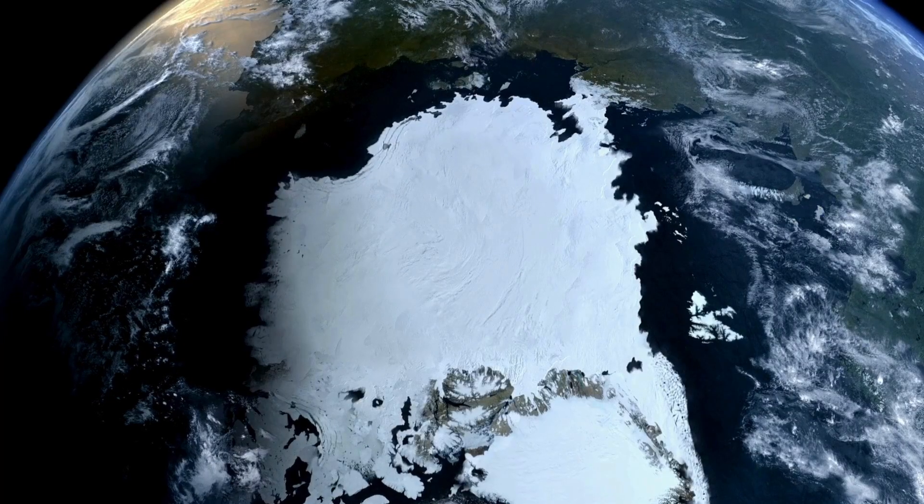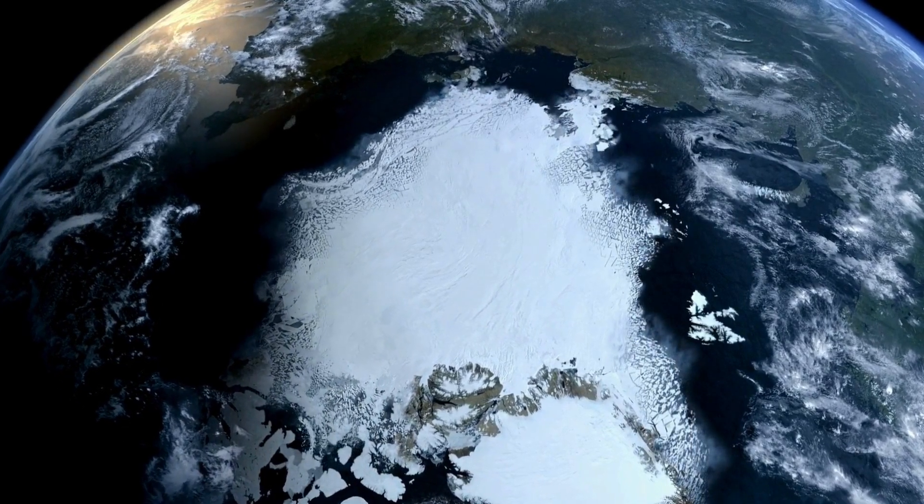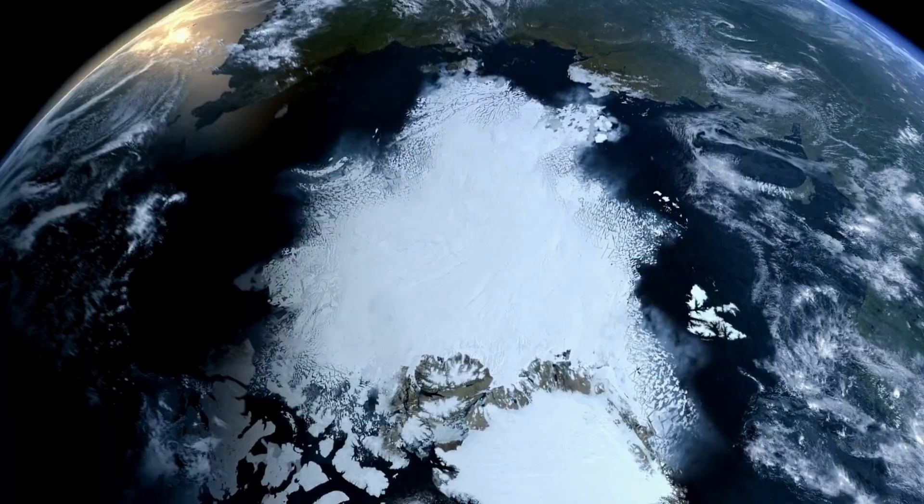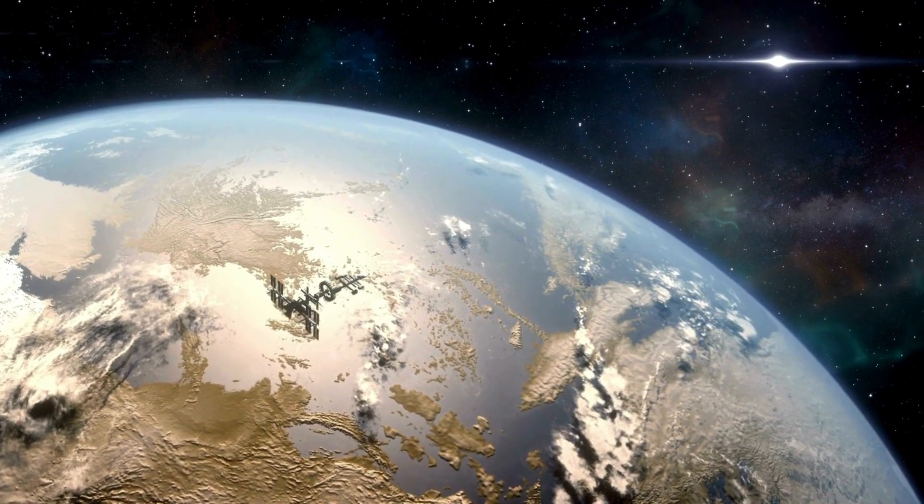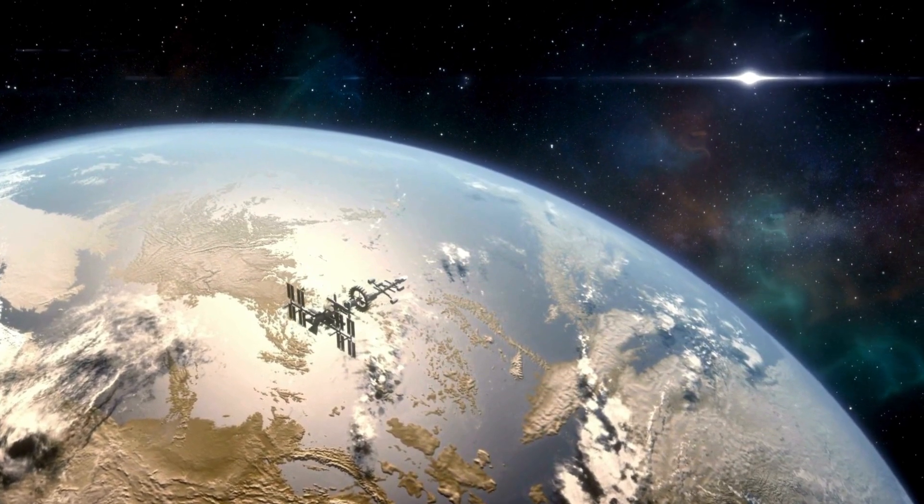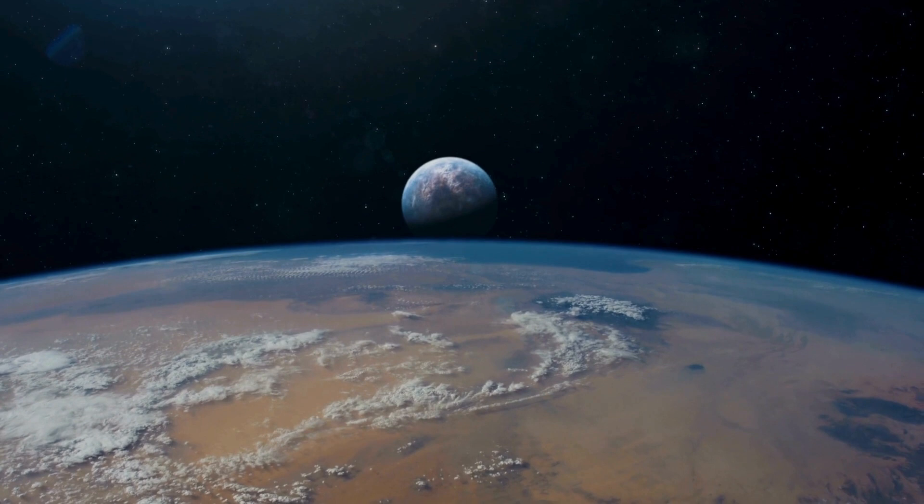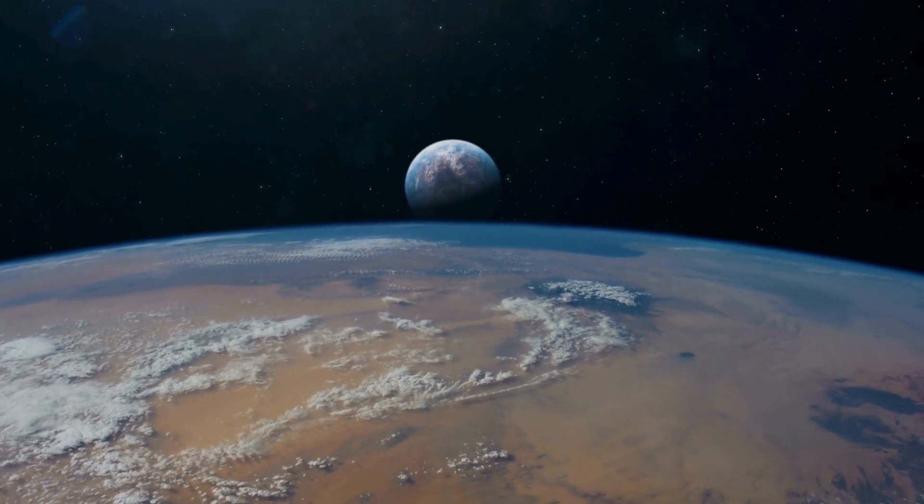Among them, Proxima Centauri b stands out as a truly amazing and puzzling planet. With a year lasting just 11.2 Earth days, its distance from its star is much closer than Earth's distance from the Sun. This means one side of the planet is perpetually bathed in light, while the other remains in eternal darkness.